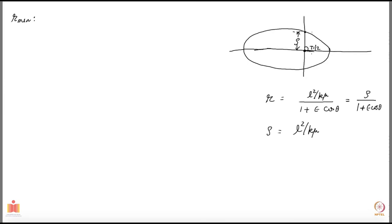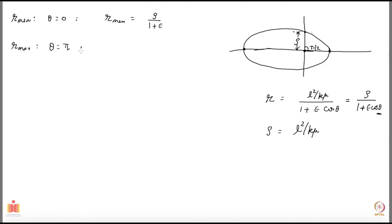R minimum occurs when theta equals zero, because that gives the smallest denominator — largest value of 1 plus epsilon cos theta. Putting theta equals zero, R minimum is rho over 1 plus epsilon. The maximum value of R is taken when theta is pi — cos theta equals minus one — so R maximum is rho over 1 minus epsilon.